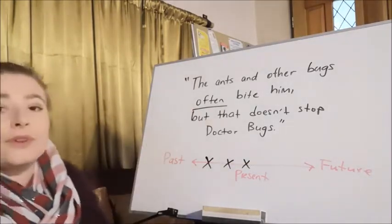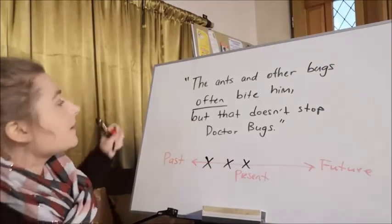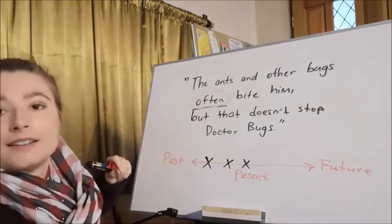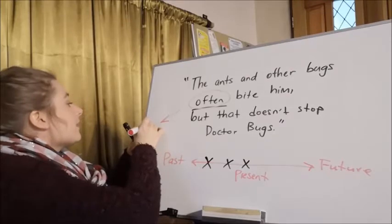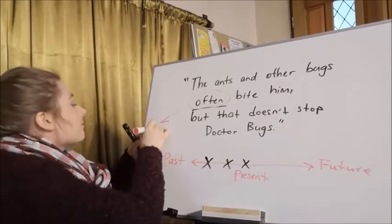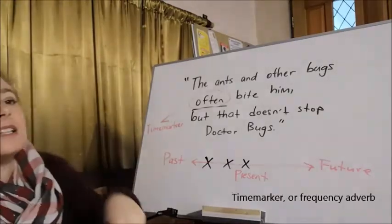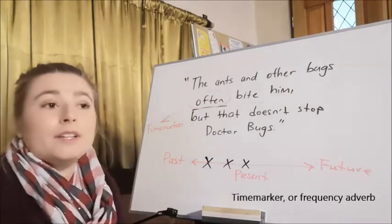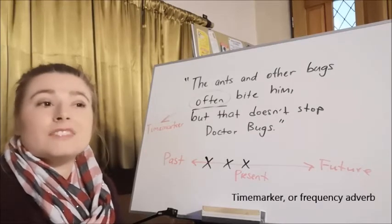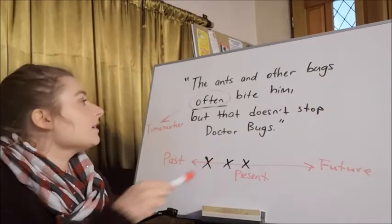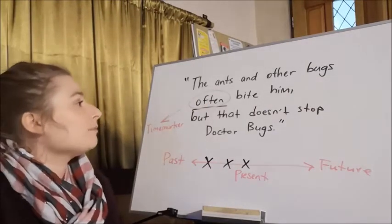And what do we call that type of word there, often? Yeah, we call it a time marker. Because it tells us how often something happens. Does it always happen? Does it never happen? Does it sometimes happen? Often. The ants and other bugs often bite him.